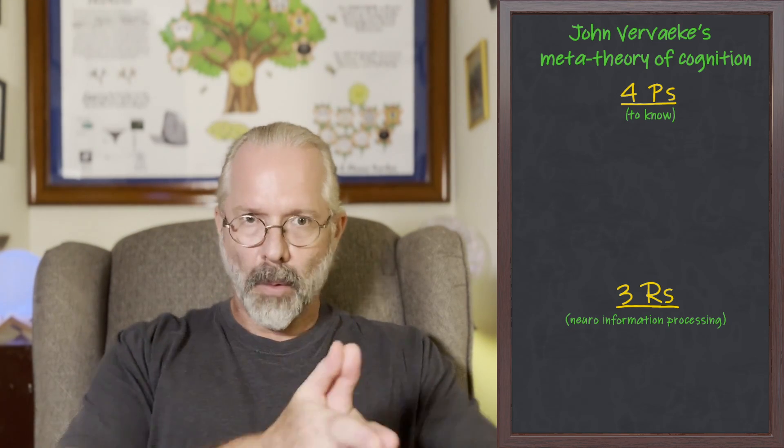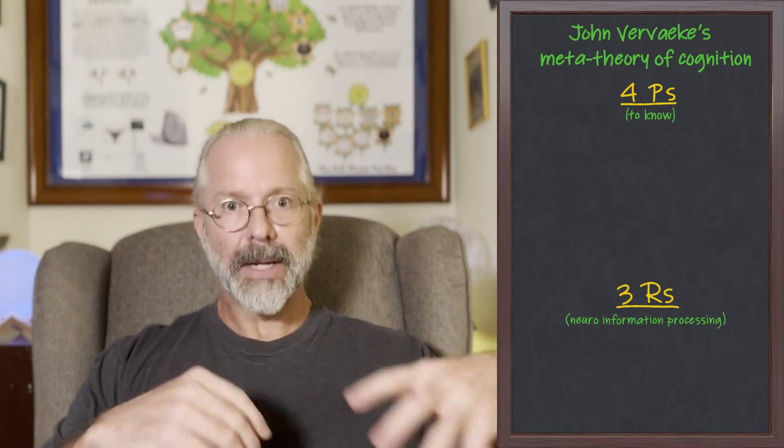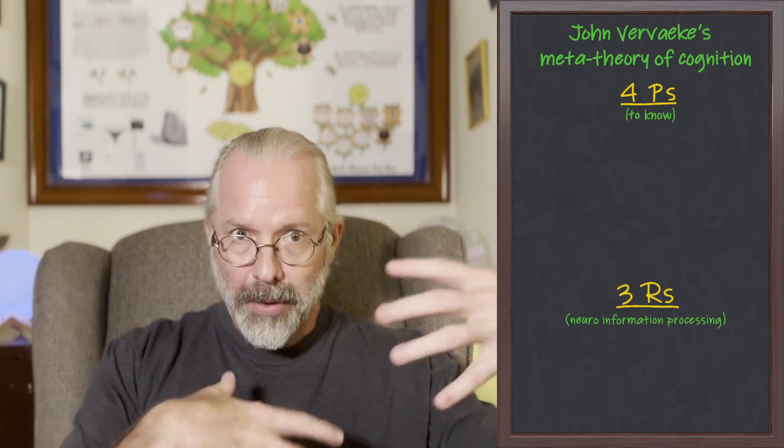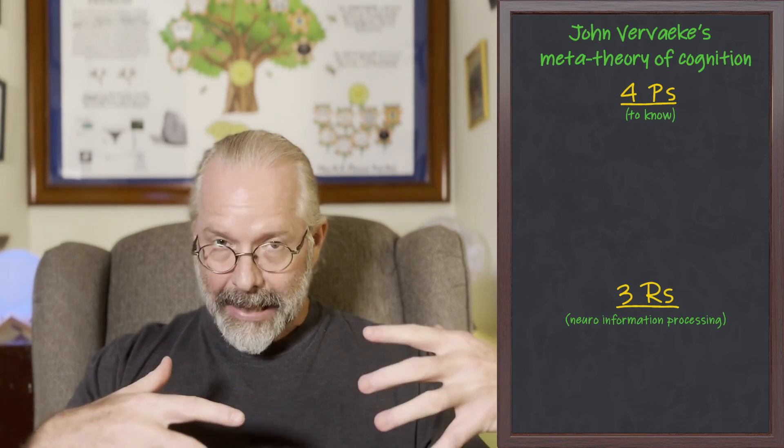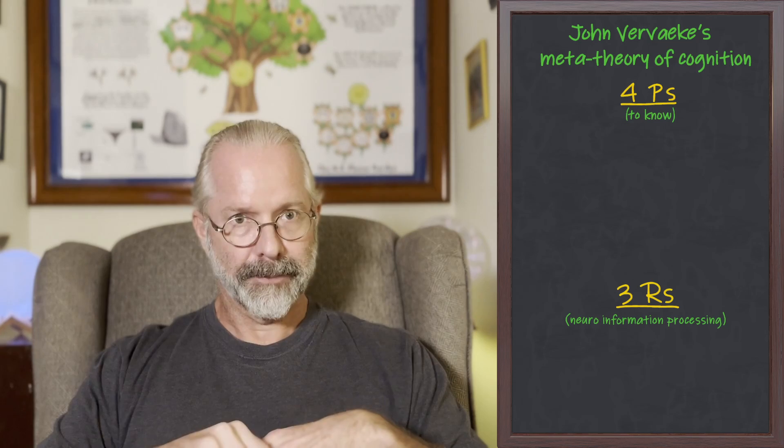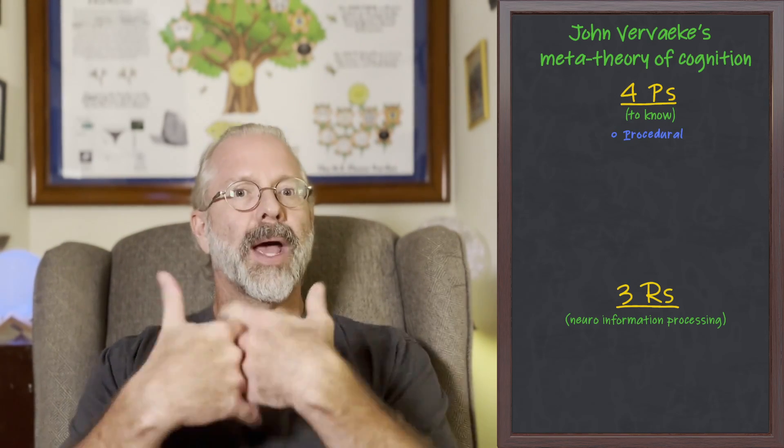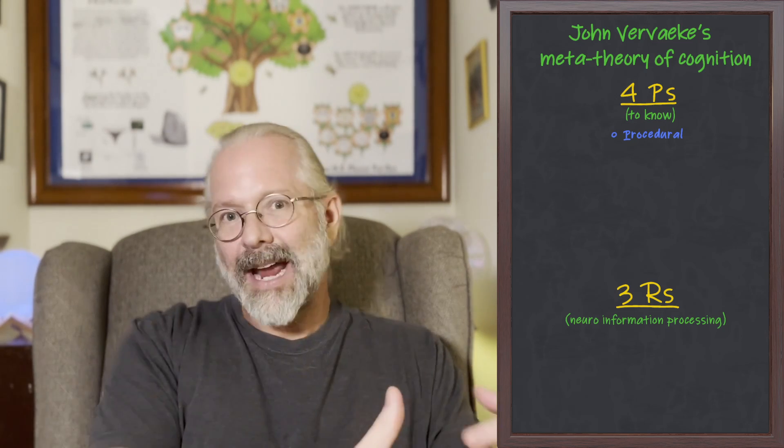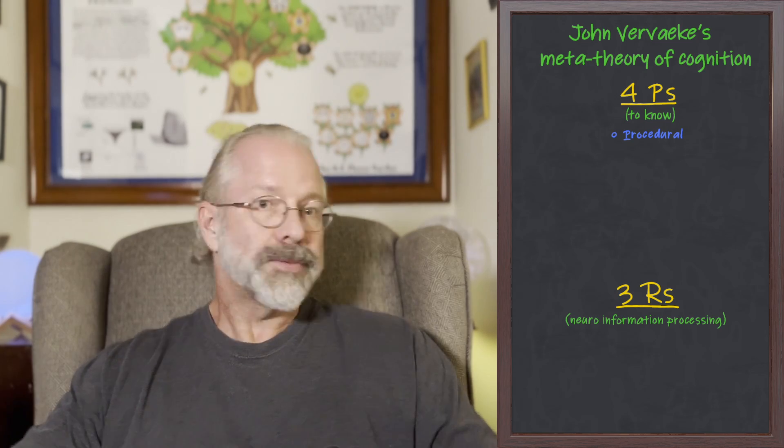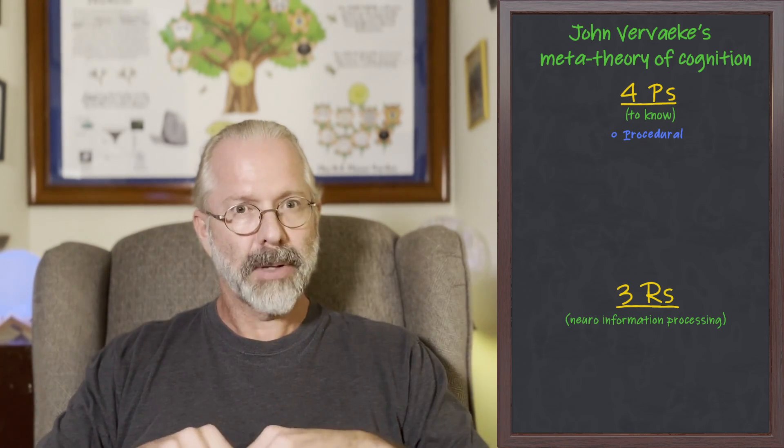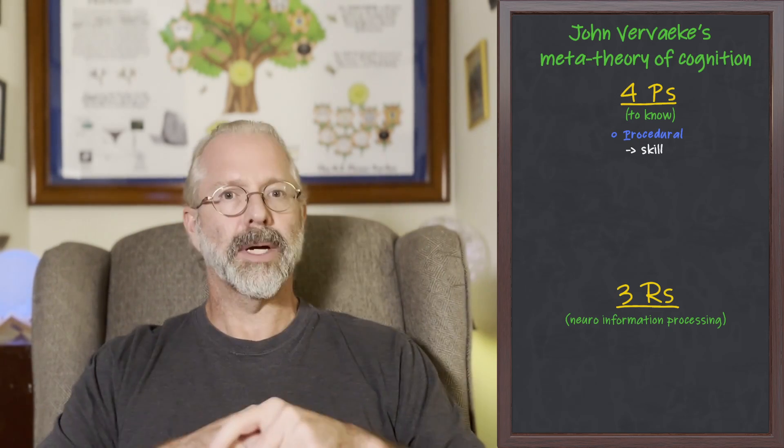So, let's start with his 4Ps of knowing. Vervaeke argues that to know something can mean a wide variety of different things depending on the mode or medium of that knowledge. And he argues that there are four different P words that enable us to categorize knowing. One is procedural. Procedural knowledge is skill-based. When you have it, it confers a power. It relates to things like anywhere from tying your shoe or knowing how to perform a particular type of difficult surgery. So, procedural knowing can be enormously complex, but it involves a set of skills and steps and recipes that get you from one point to the other.